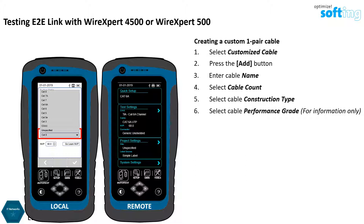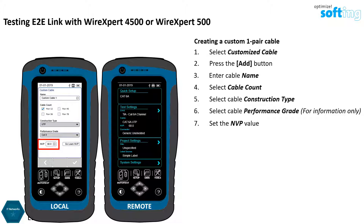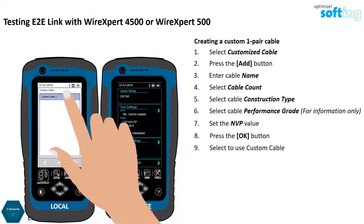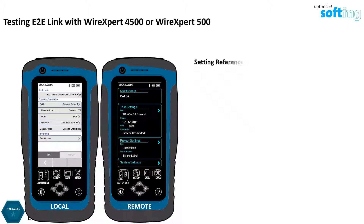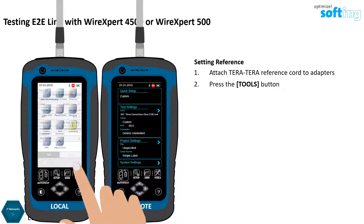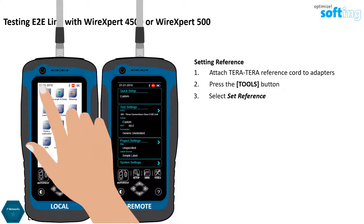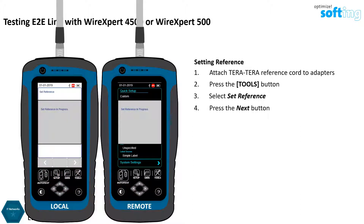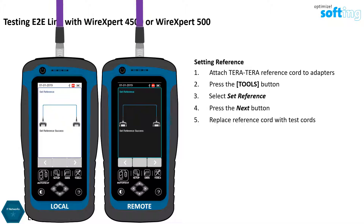Hence, it is important to select the correct option to be documented for future references. Enter the correct NVP value — this is the same option as in the test settings — and press OK to proceed. Select to use the custom cable. Perform a set reference using the Tera2Tera reference cord provided in the kit. Press the Tools button on the local unit and select Set Reference, then press Next to proceed.